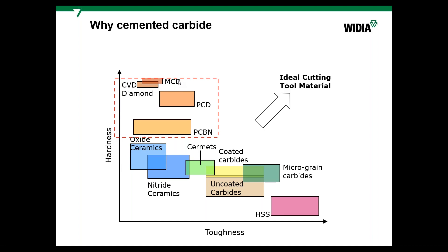We have different cutting tool materials: super-hard materials like PCD (polycrystalline diamond) and PCBN, and also very tough materials like high-speed steel. Cemented carbide tools have a much wider application area because some grades can have very high toughness and others can be very hard.